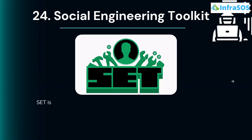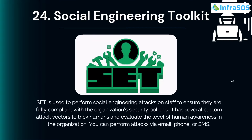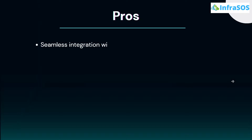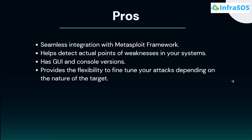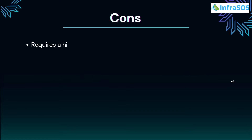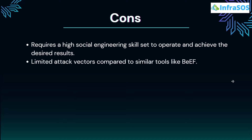At number 24 we have the Social Engineering Toolkit or SET. SET is used to perform social engineering attacks on staff to ensure they are fully compliant with the organization's security policies. It has several custom attack vectors to trick humans and evaluate the level of human awareness in the organization, and you can perform multiple attacks via email, phone, or SMS. Pros include seamless integration with the Metasploit framework, helping detect actual points of weakness, and it has both a graphical user interface and a console version. Cons include requiring a high social engineering skill set to operate and having limited attack vectors compared to similar tools like BeEF.